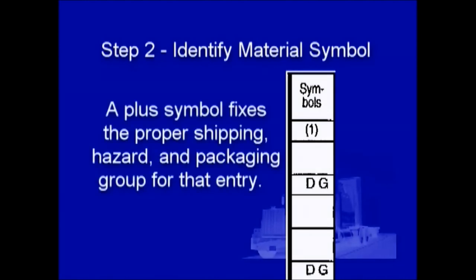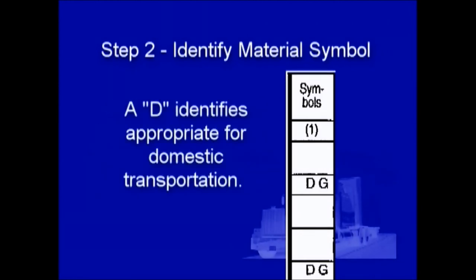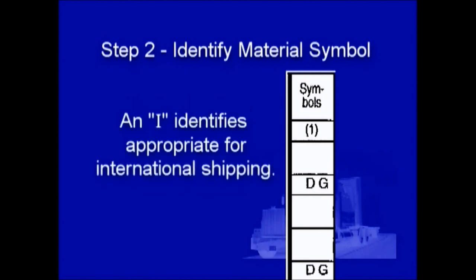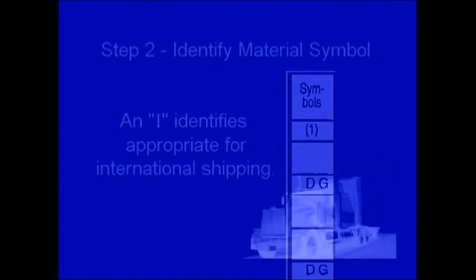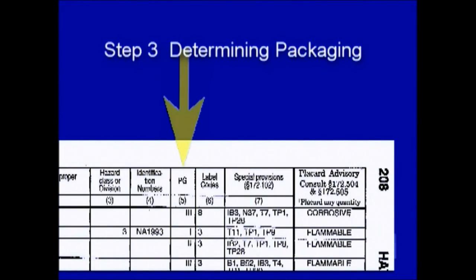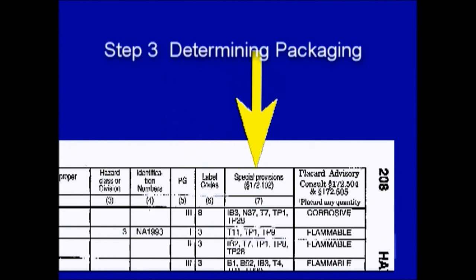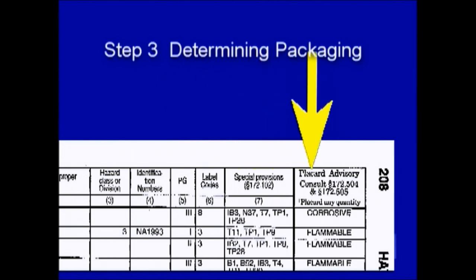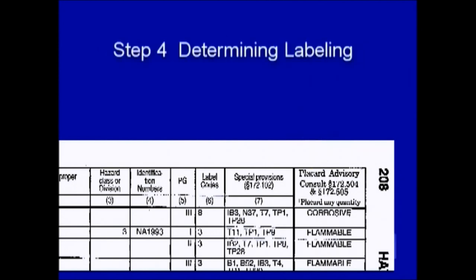In step two, you identify the material symbol as specified in column one. Remember, a plus symbol fixes the proper shipping name, hazard, and packaging group for that entry. A D identifies proper shipping names which are appropriate for domestic transportation, and an I identifies proper shipping names appropriate for international shipping. For step three, determining packaging is a three-part process: part one is to determine the packing group in column five; second, check for special provisions in column seven; and finally, check for packaging authorization requirements in column eight. Remember, it is the shipper's responsibility to ensure compliance with proper packaging. And finally, for step four, determine the proper labeling from column six.